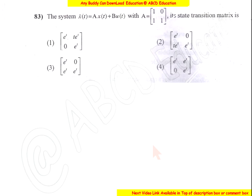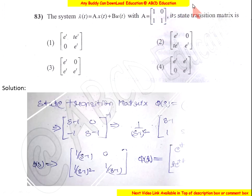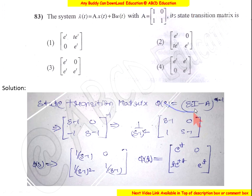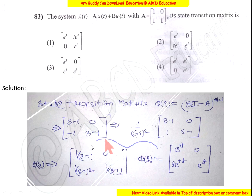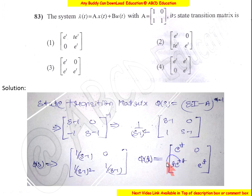Now question number 83. For a system with the given A matrix, find the state transition matrix — options are provided. We know the state transition matrix phi(S) equals (SI minus A) inverse. Finding the adjoint and inverse of (SI minus A), we get phi(S). After taking the inverse Laplace transform, phi(T) equals a matrix with elements e^t, t·e^t, and t·e^t. This corresponds to option 2.